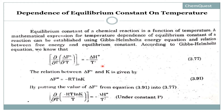This is the Gibbs-Helmholtz equation for free energy. The relation between ΔF° and K — which we know from our previous knowledge — is: ΔF° equals minus RT ln K.